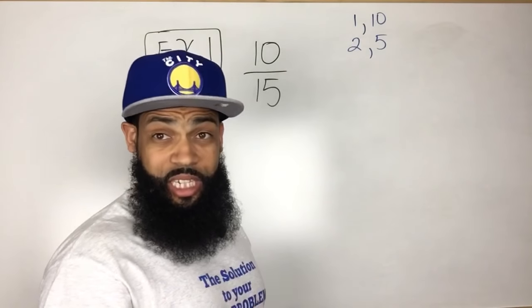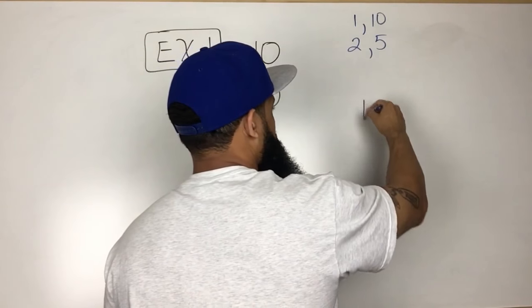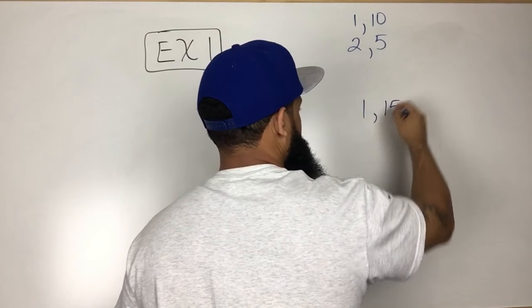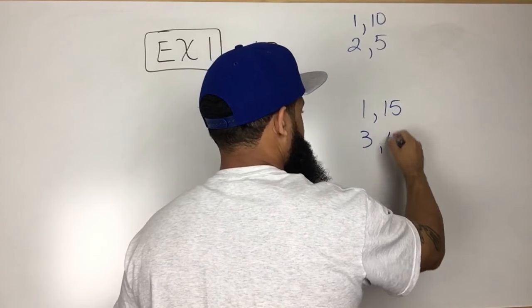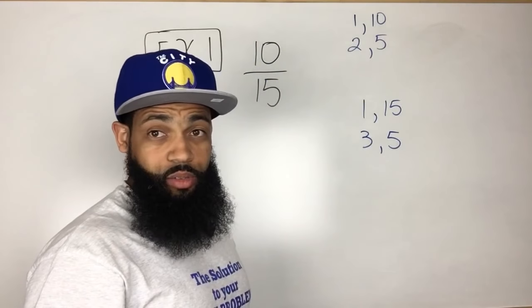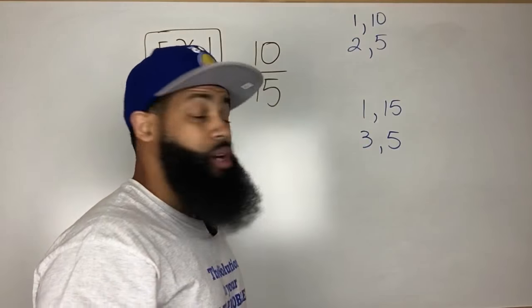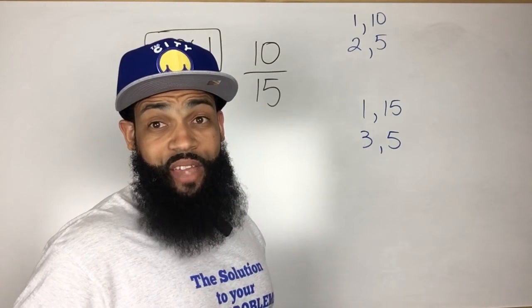The factors of 15 are 1 times 15 and then 3 times 5. So the four factors of 15 are 1, 3, 5 and 15.